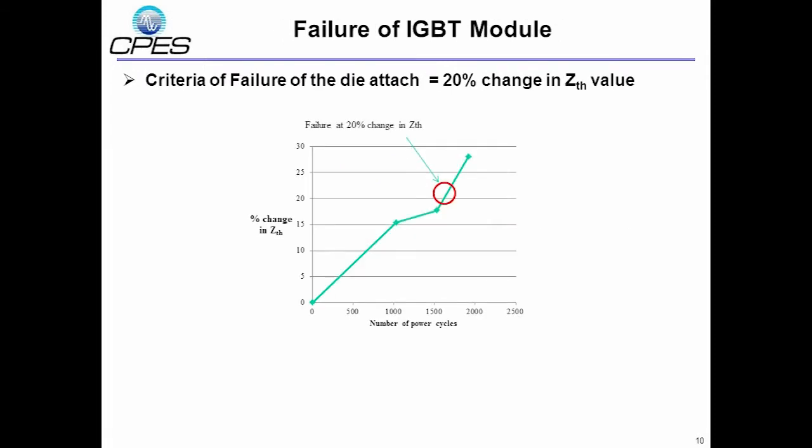This is some of the results of power cycling test done on one of the samples and we observed that the sample shows 20% change in ZTH after about 1700 power cycles.